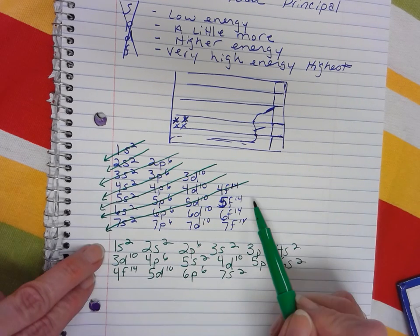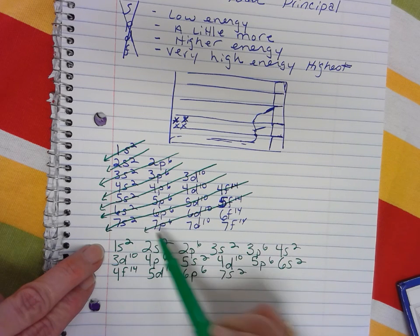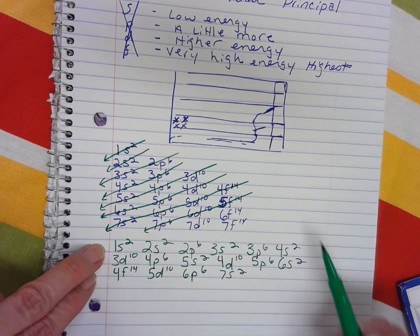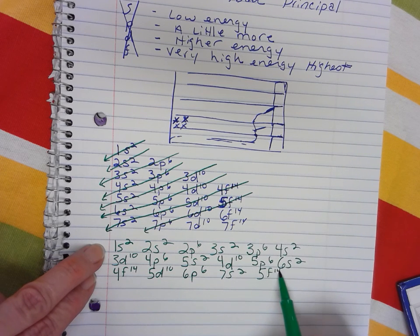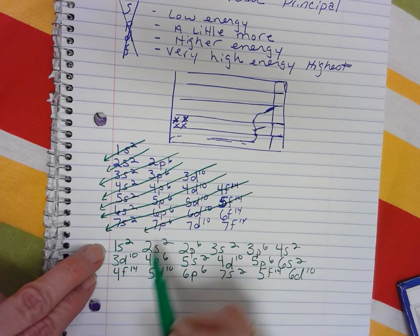Then your 5f14, your 6d10, and 7p6. So 5f14, 6d10, 7p6.